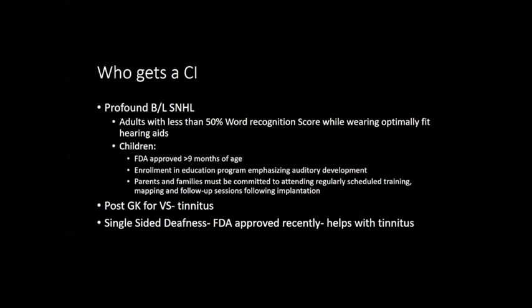The ideal cochlear implant candidate has profound bilateral sensorineural hearing loss with less than 50% word recognition score while wearing an optimally fit hearing aid. It is approved for children more than nine months of age, who must be enrolled in an education program emphasizing auditory development, with committed families. It can be performed in patients with vestibular schwannoma post-gamma knife, where it helps mainly with tinnitus. Cochlear implant has recently been approved for single-sided deafness, again helping more with tinnitus than actual hearing loss.